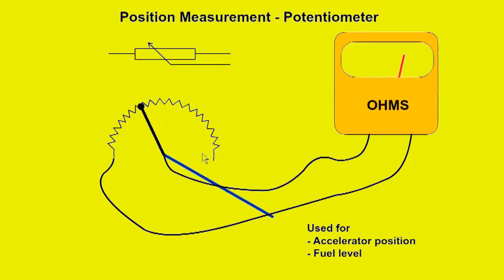The angular position sensor uses a resistor or potentiometer to determine position. As the wiper moves, the resistance is varied and provides a signal to the ECU. They are used for accelerator position and fuel level measurement.